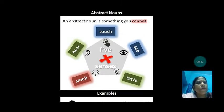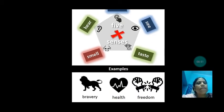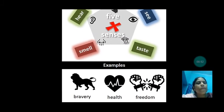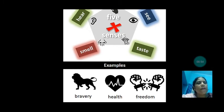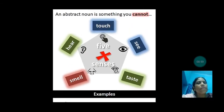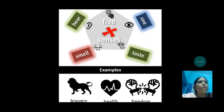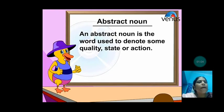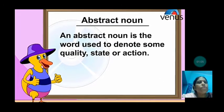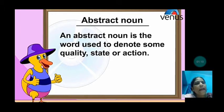The five sense organs are: touch, hear, smell, see, and taste. Examples of abstract nouns include bravery, health, and freedom. We can't touch those things. We can't taste, see, or hear them — they don't have voice, we can't touch them. So an abstract noun is the word used to denote some quality, state or action.